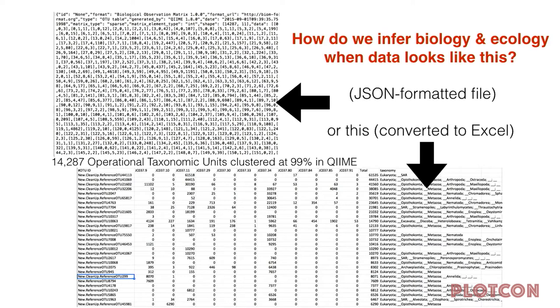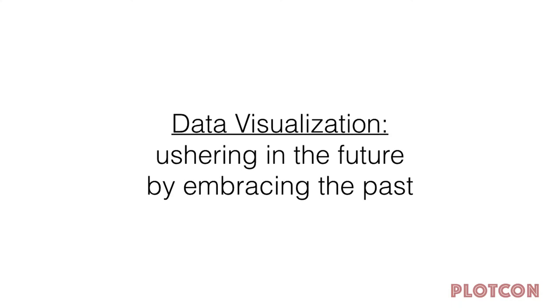The bottom line is: how are we going to deal with this overload of data? How are we actually going to go back to doing biology and getting ecological information when our data is just completely overwhelming to the people with the most specialized knowledge? This is an example of actual data sets from these pipelines — we get JSON-formatted files, we can convert them to Excel or tab-delimited files, but it's still an Excel file with 14,000 rows, and no one wants to deal with that. I want to make an argument that we can solve this problem by using data visualization technologies, looking towards the future by really embracing the past.